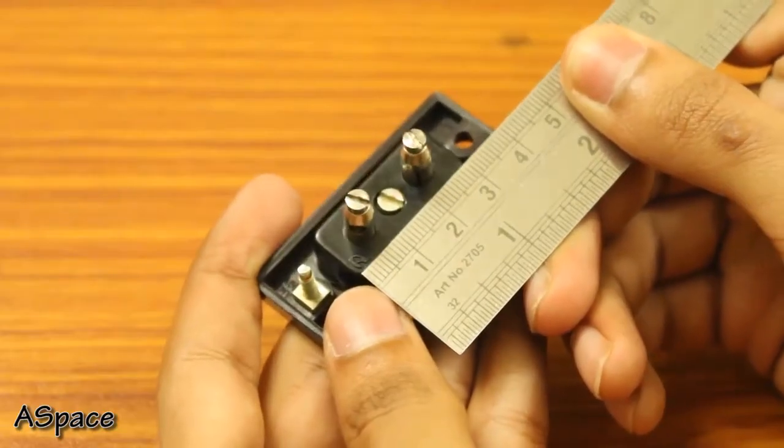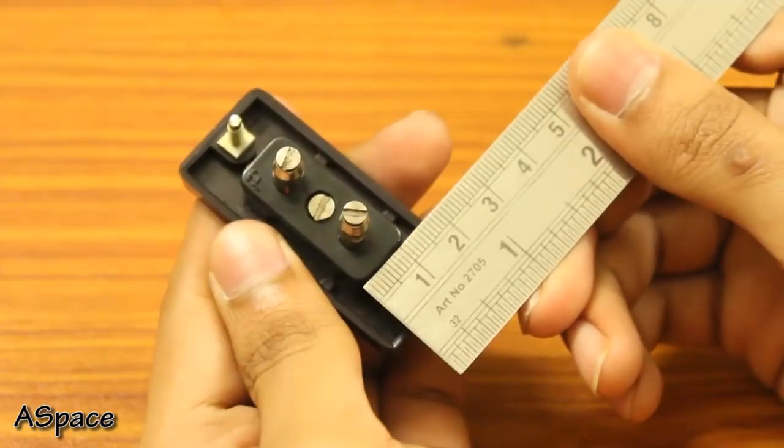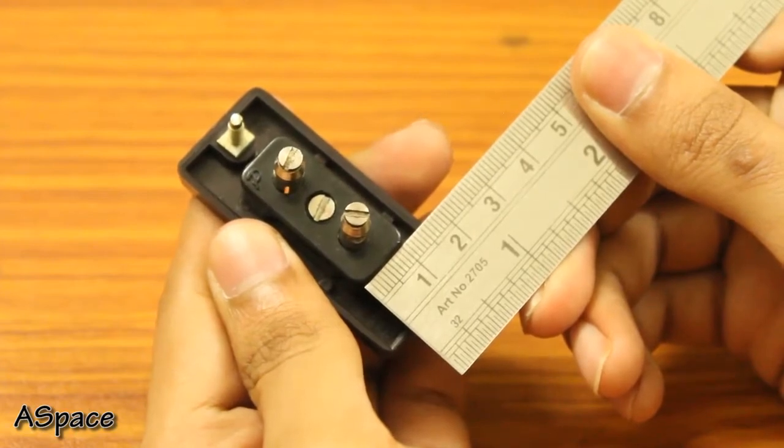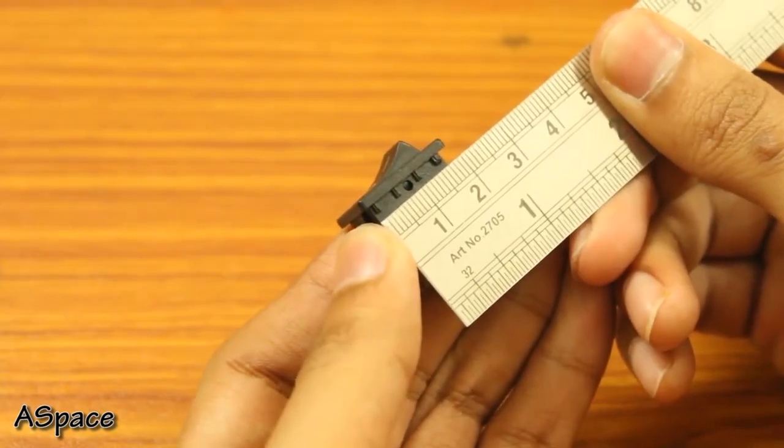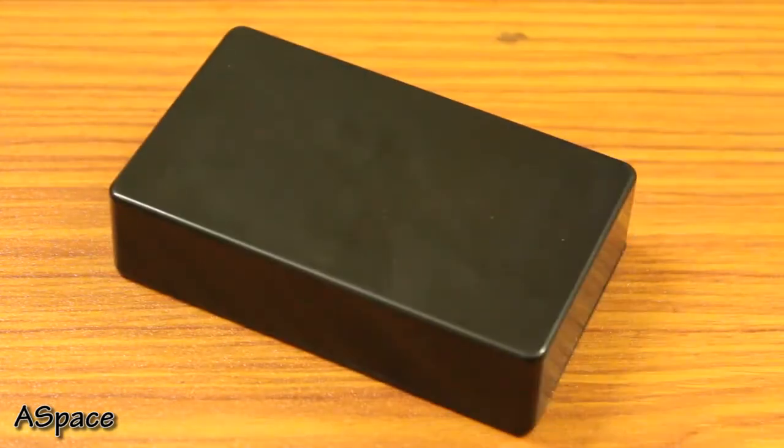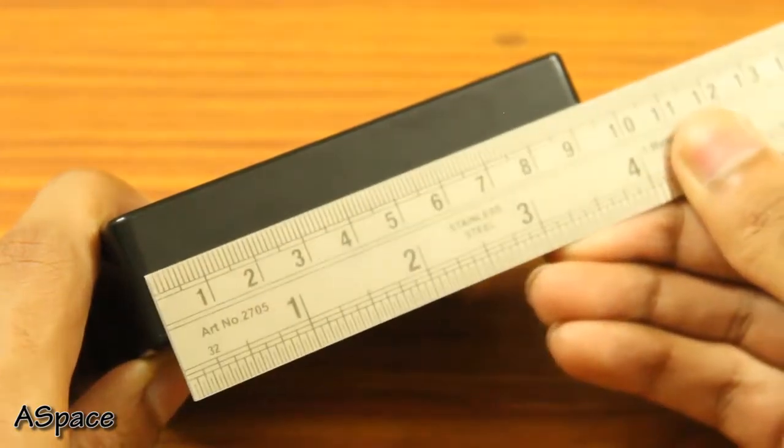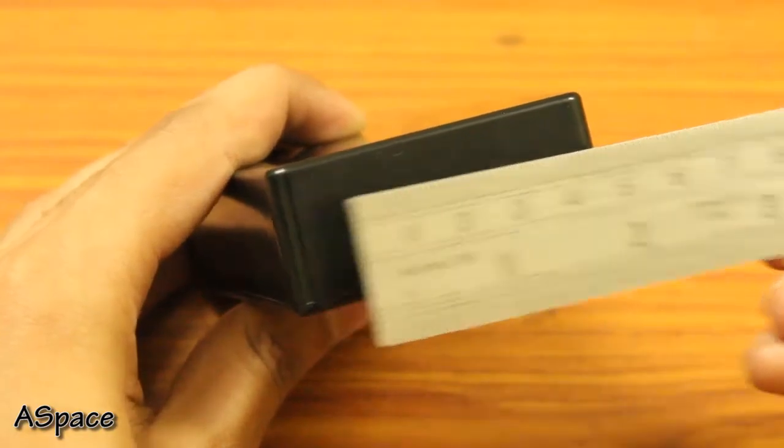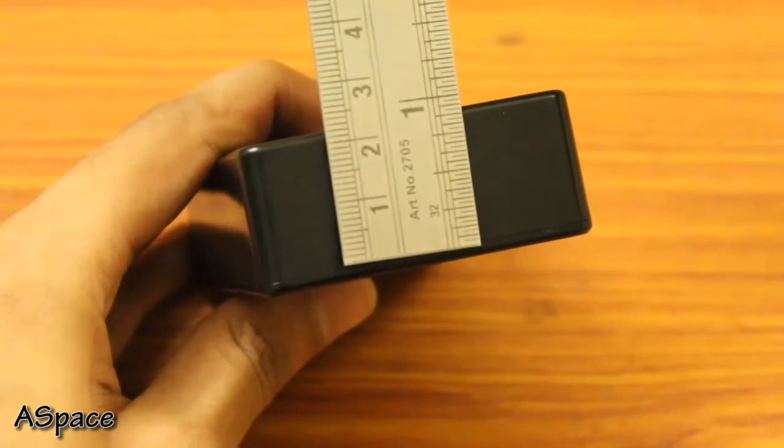At first I measured the dimension for the AC socket, the switch and for the two LEDs which will later act as indicators. Then I transferred the measurement on the enclosure. I went with this small enclosure with a length of 10cm, breadth of 6cm and a height of 2cm. It is actually pretty small.